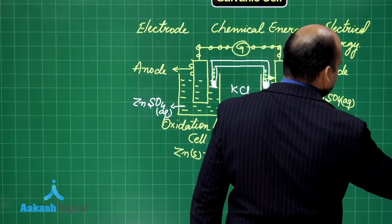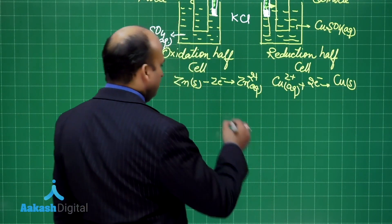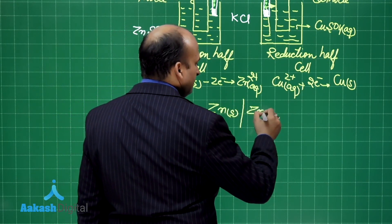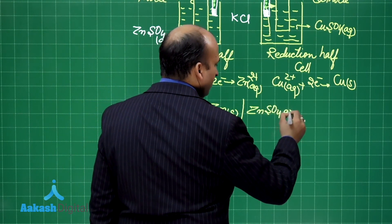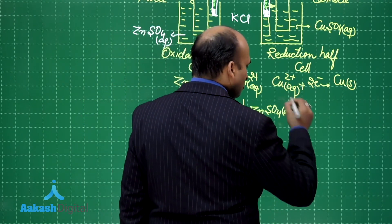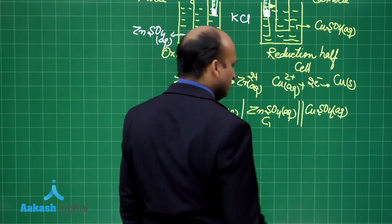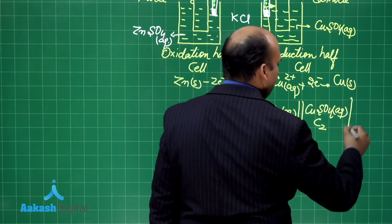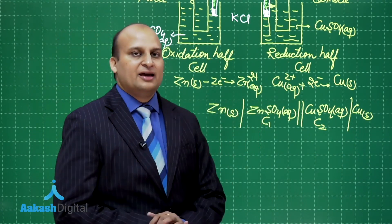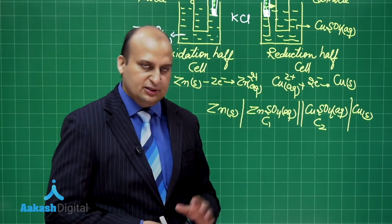Now, how do we represent these cells? These cells are represented by this way. Zinc solid is dipped in zinc sulfate aqueous solution, whose concentration is C₁, which is connected through a salt bridge to a copper sulfate aqueous solution having concentration C₂, in which this copper solid is dipped. So, this is how we express this cell. This is termed as the cell representation, that is point number 1.